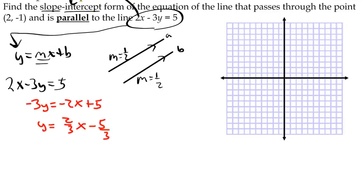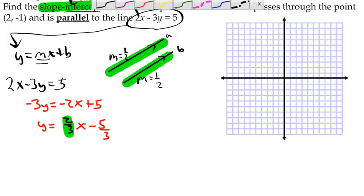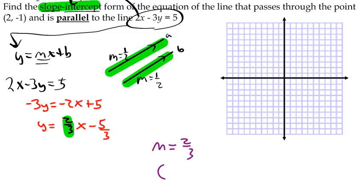So all I've done is isolated y. The only piece of information we're interested in is the slope. We don't care about the y-intercept, because the only thing parallel lines have in common is the slope. So we know our new equation is going to have a slope of 2/3. We're going to use slope 2/3 and the point (2, -1) to find our new equation.